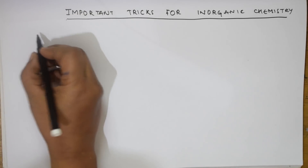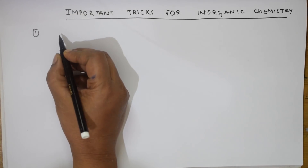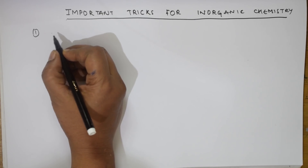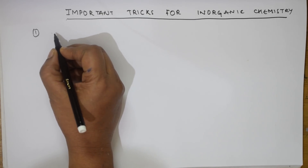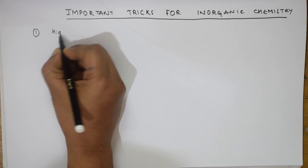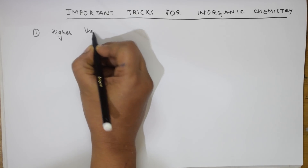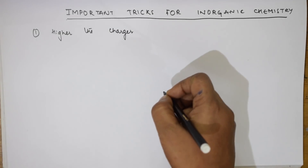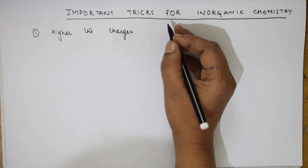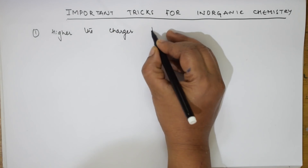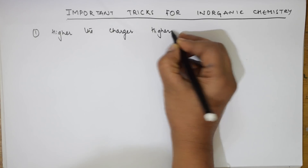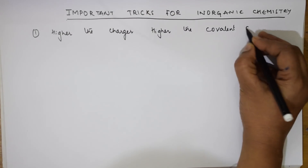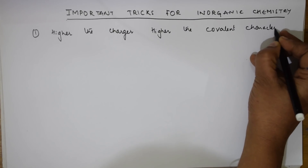The first important thing to remember: if they give you a covalent character question, remember — higher the charge on the particular element or ion given, higher would be the covalent character. Remember this first important concept about covalent character; it's easy to apply in questions.